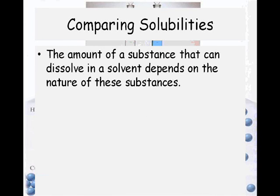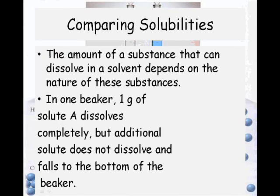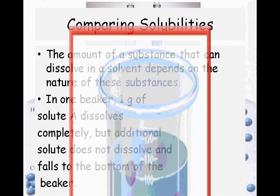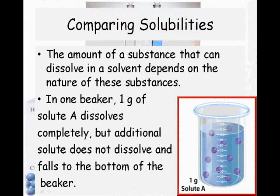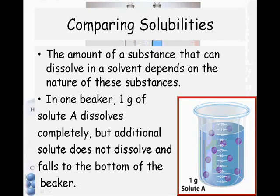The amount of a substance that can dissolve in a solvent depends on the nature of those substances. For our first example, you have a beaker with one gram of solute A, and it actually dissolves completely, but additional solute that does not dissolve falls to the bottom of the beaker.